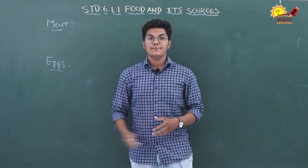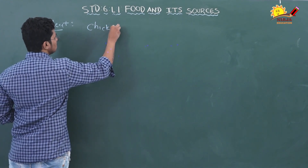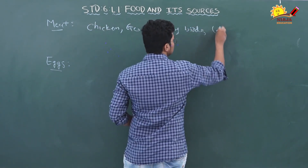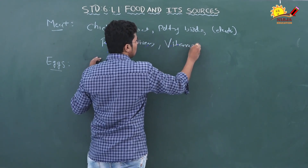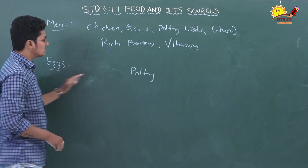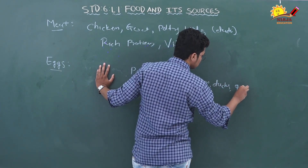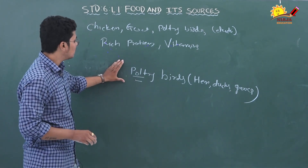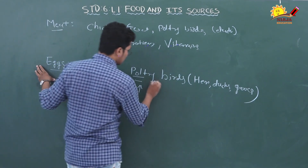Meat and eggs are also animal sources. Poultry birds like duck, hen, and goose give us eggs. Meats are rich in protein and vitamins, and just like meat, eggs are also rich in proteins and vitamins. Poultry birds are the birds that give us both meat and eggs. These birds are grown at farms known as poultry farms.